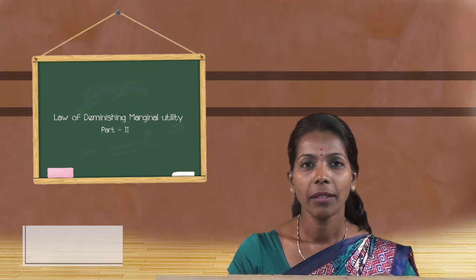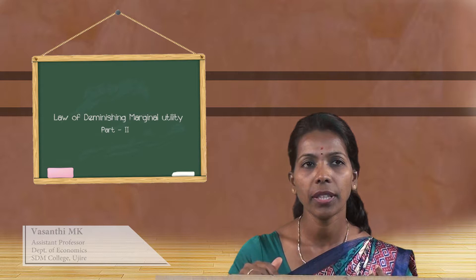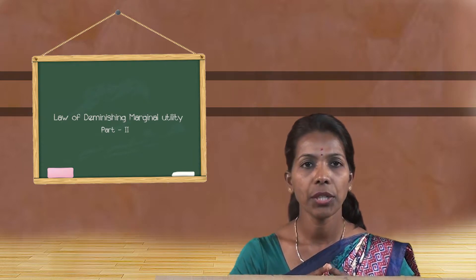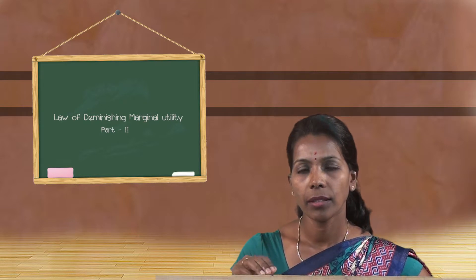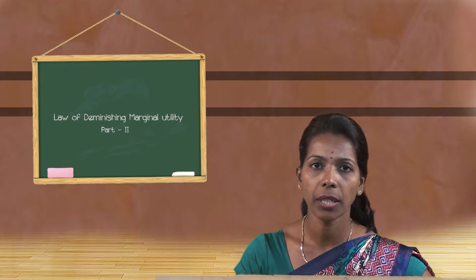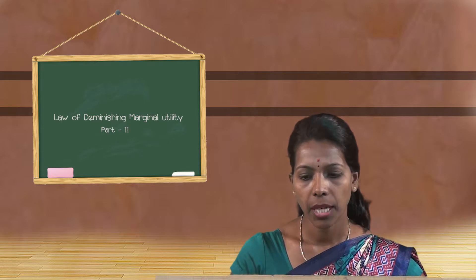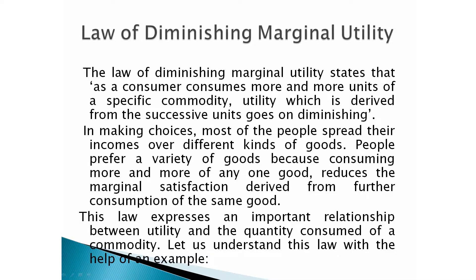Hello students. Today we will discuss the law of diminishing marginal utility with the help of a diagram and tabular formation. In the previous class we studied the meaning of utility, total utility, marginal utility, and the assumptions of the law. On the basis of those assumptions, today we will discuss the theory with the help of the diagram.